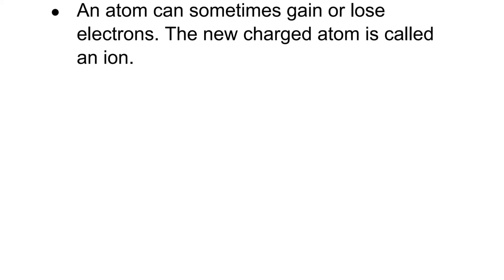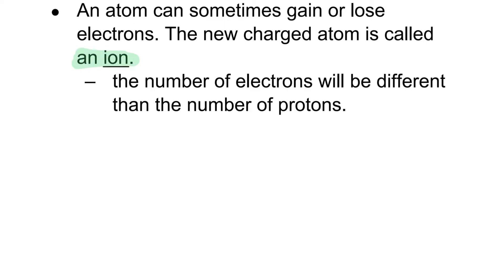An atom can sometimes gain or lose electrons. We call the newly charged atom an ion. An ion is when the number of electrons is different than the number of protons that make up an element, and there are two types of ions.